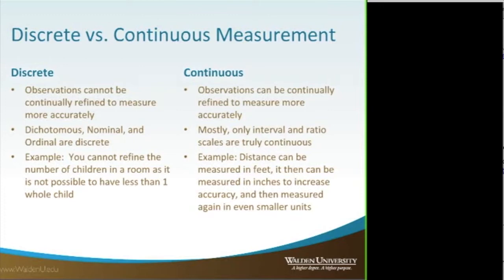An example of ordinal would be age groups — birth to age 20, 20 to 30, 30 to 40, 40 to 50. Those are in an ordered set, so they're still groups rather than numbers, but they have a sequence to them.